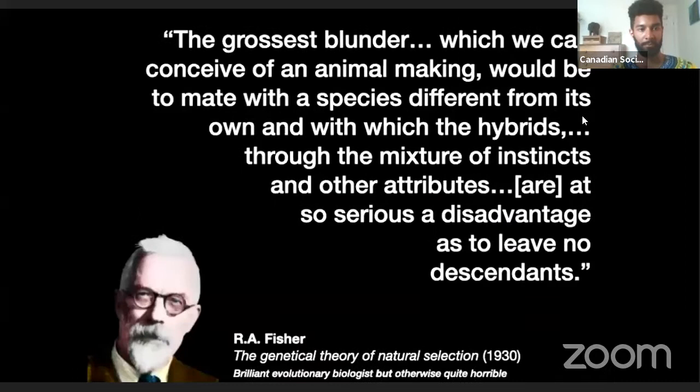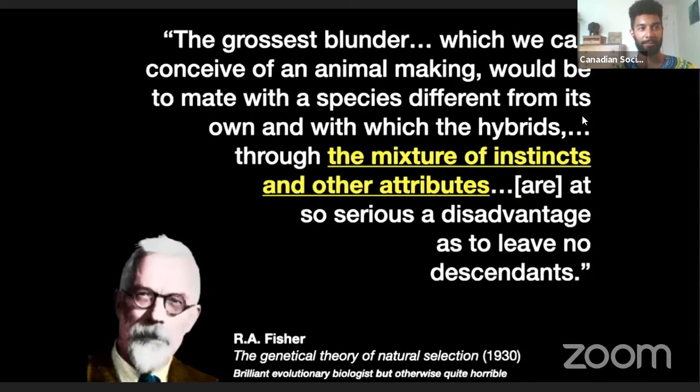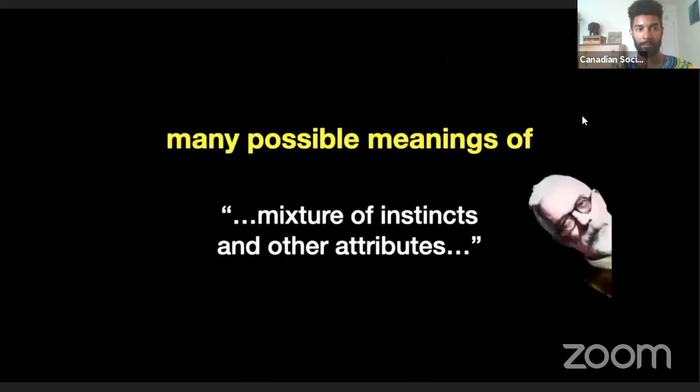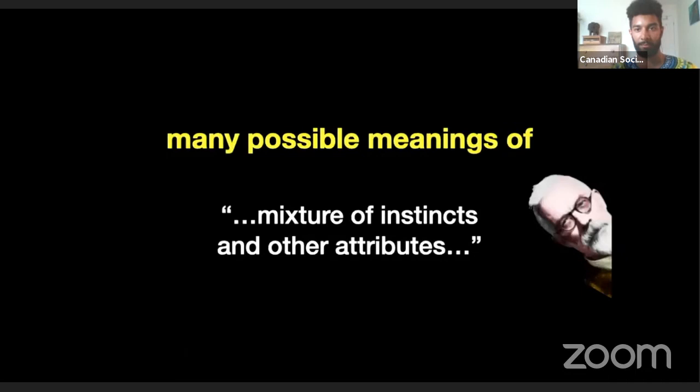This project was done in collaboration with McKenzie Uger Kronish, Ken Whitney, Lauren Rieseberg, and Dolph Schluter. I want to begin with a quote by Ronald Fisher from his 1930 book, The Genetical Theory of Natural Selection: 'The grossest blunder which we can conceive of an animal making would be to mate with a species different from its own and with which the hybrids — the mixture of instincts and other attributes — are at so serious a disadvantage as to leave no descendants.'